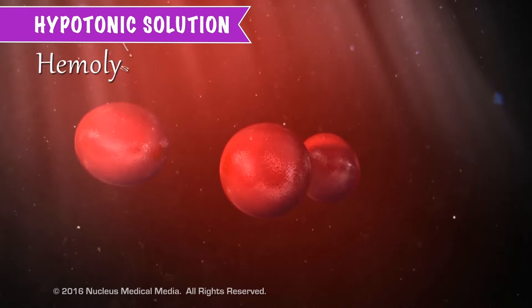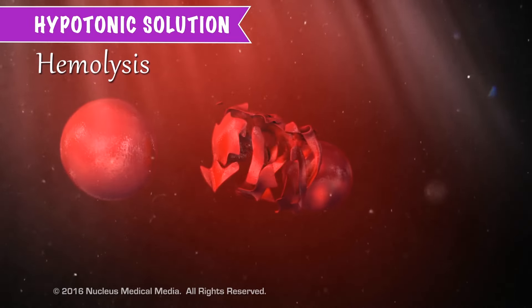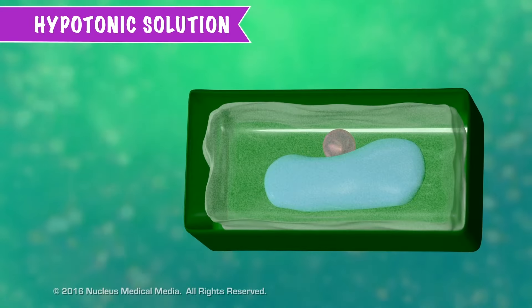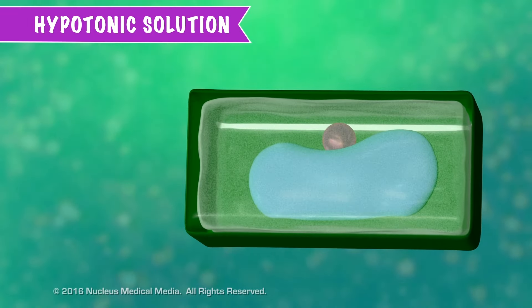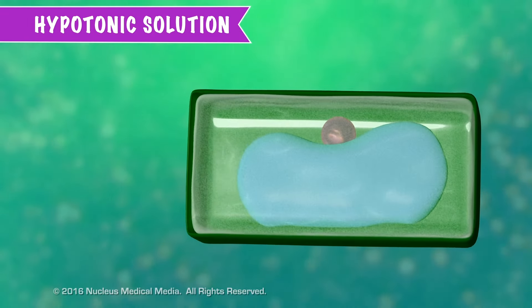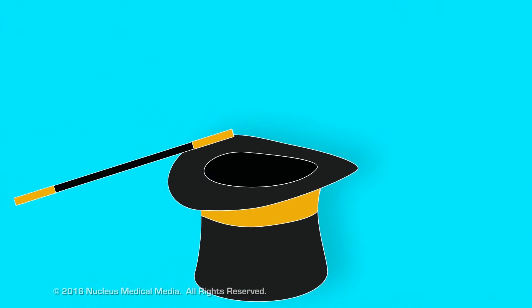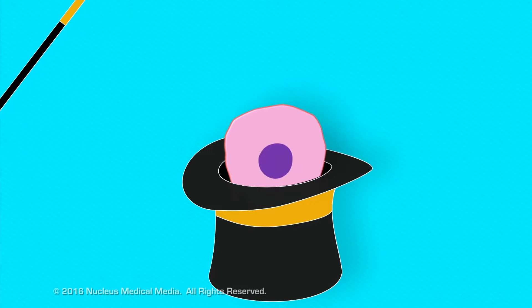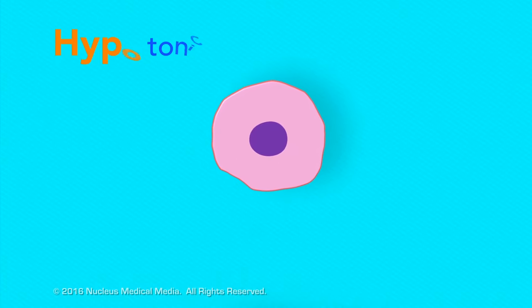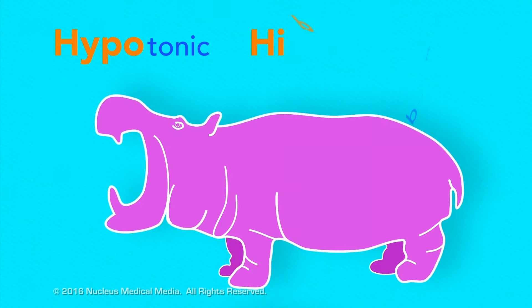Cytolysis in red blood cells is called hemolysis. Cytolysis doesn't happen in plant cells because the rigid cell wall prevents the cells from bursting. Here's a little trick to remember that hypotonic solutions cause a cell to swell rather than shrivel: when you think of hypo, think of a big swollen hippopotamus, or hippo for short.